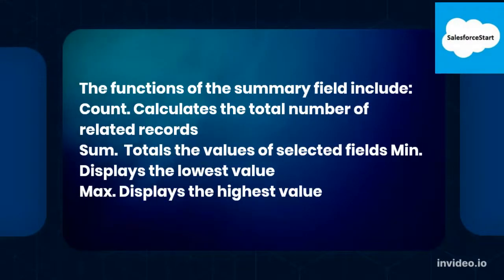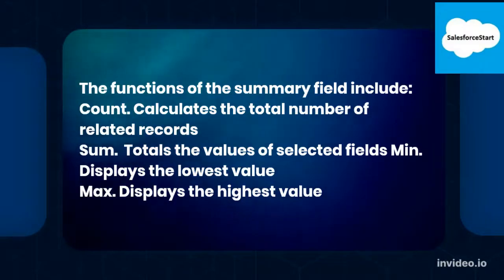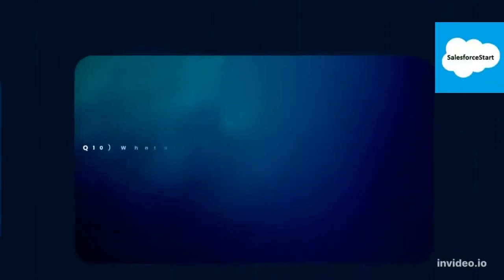The functions of the roll-up summary field include: Count — calculates the total number of related records; Sum — totals the values of selected fields; Min — displays the lowest value; Max — displays the highest value.